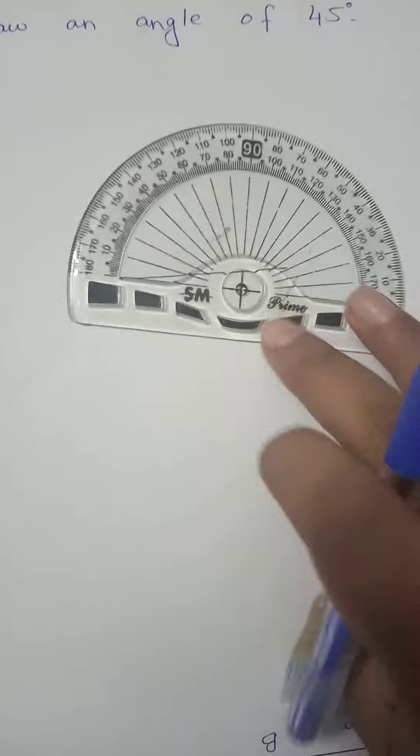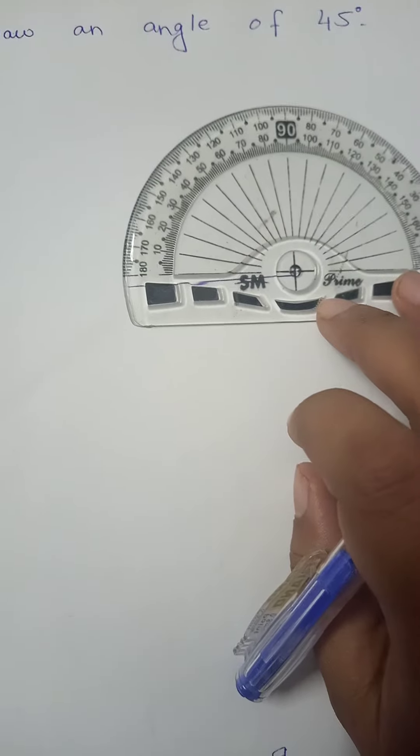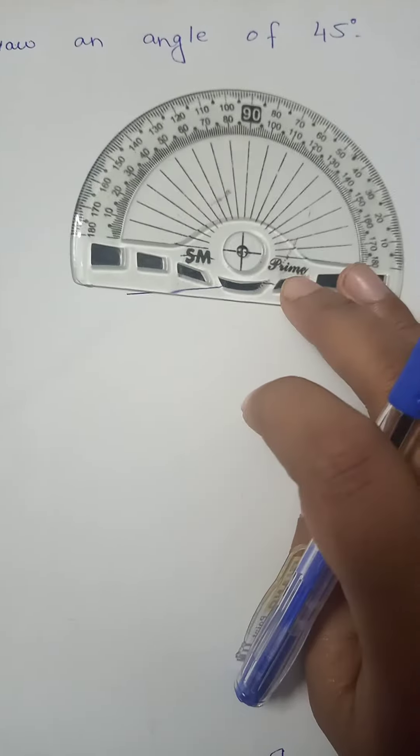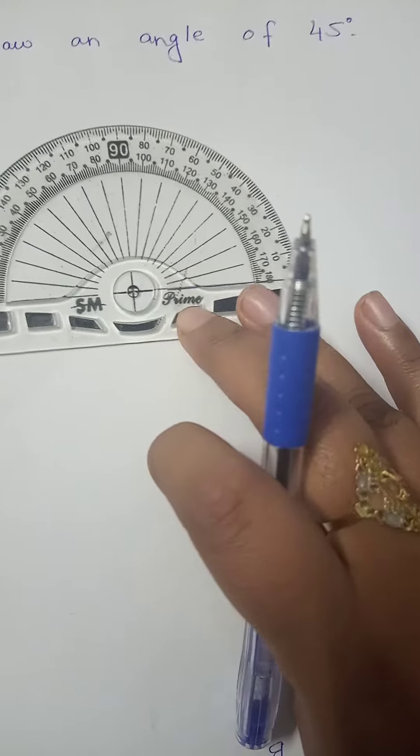Now you can see you have a protractor. Now I have to draw the angle of 45, so I have to set the protractor here.